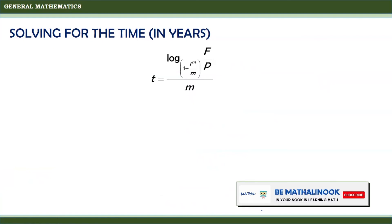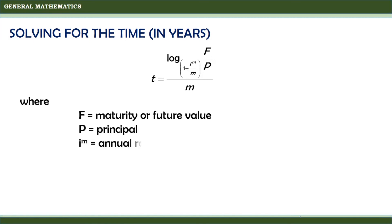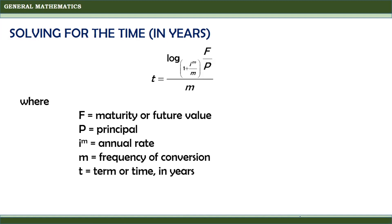Finally, solving for time in years is given by the formula T equals the logarithm of F divided by P, to the base 1 plus I(M) divided by M, all divided by M. Where F is the maturity or future value, P is the principal, I(M) is the annual rate, M is the frequency of conversion, and T is the term in years.